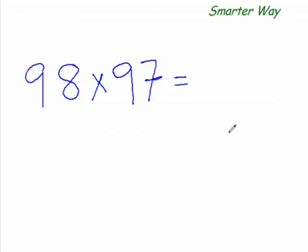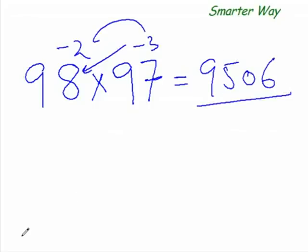The smarter way of multiplying 98 times 97 would be, watch me. That's your answer.